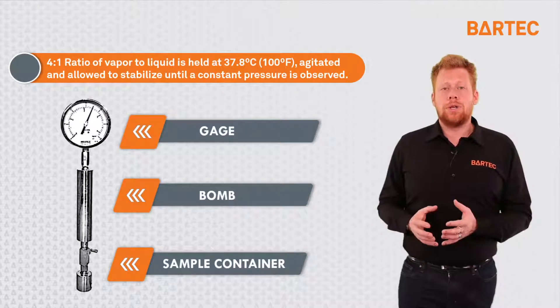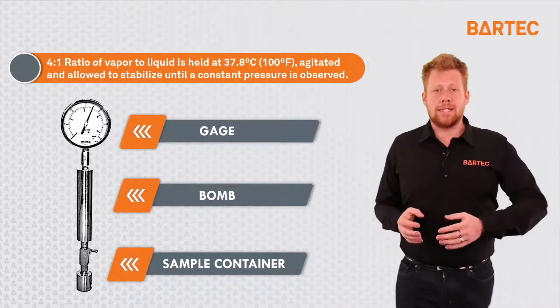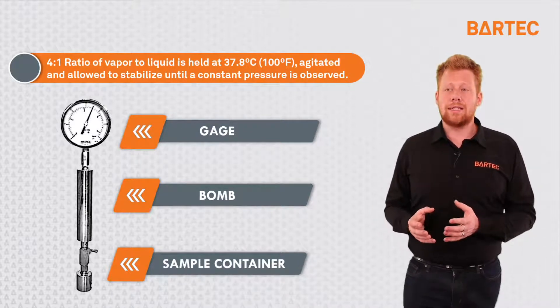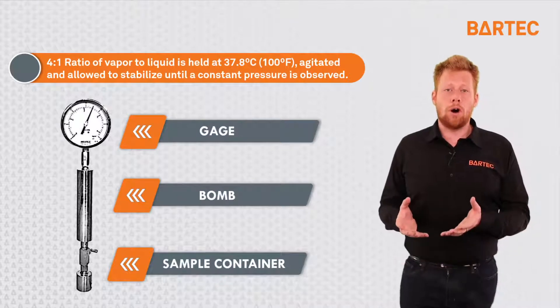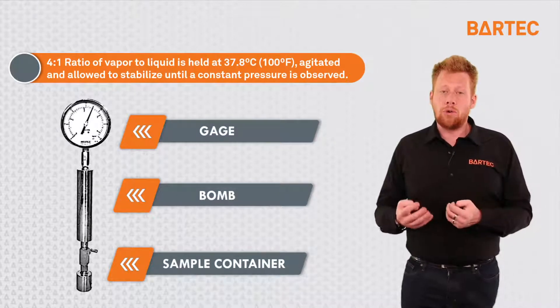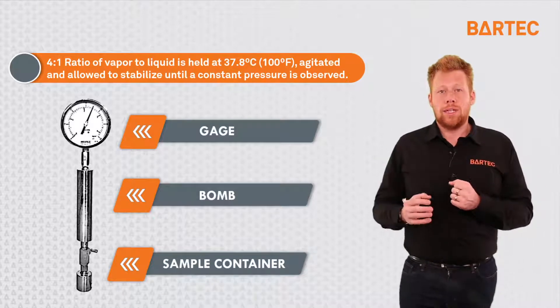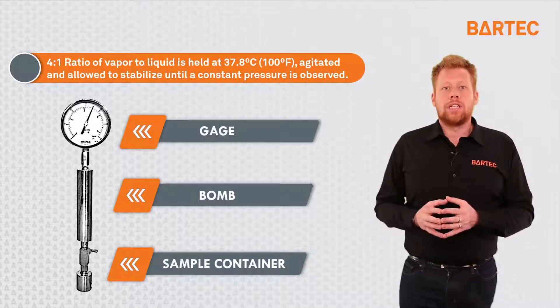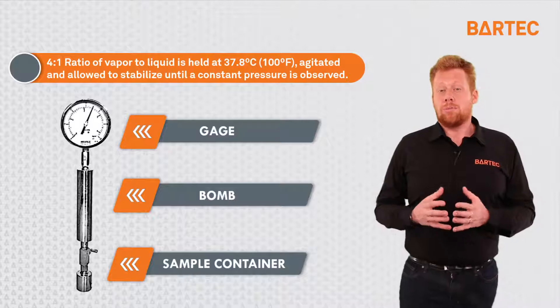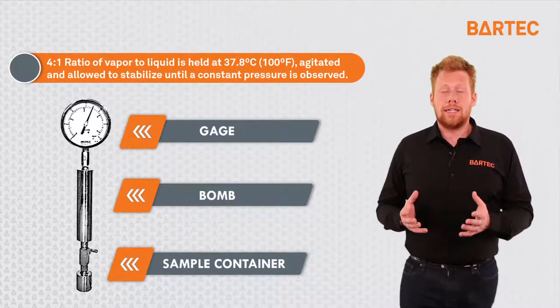In a laboratory, we use a test apparatus like the one you can see here that contains a sample container, a bomb used to do a 4 to 1 ratio of vapor to liquid, and a gauge that will indicate what the pressure of the vapor released by the liquid is.